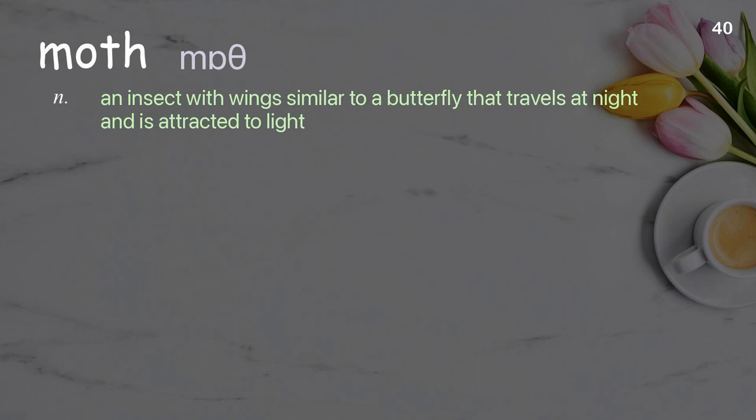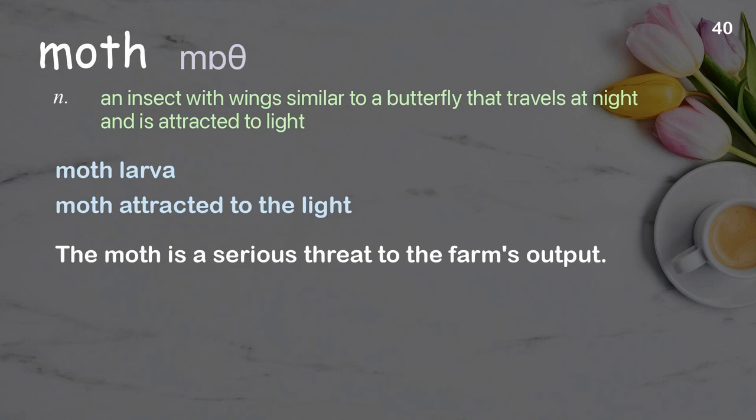Moth: An insect with wings similar to a butterfly that travels at night and is attracted to light. Examples: moth larva, moth attracted to the light. The moth is a serious threat to the farm's output.